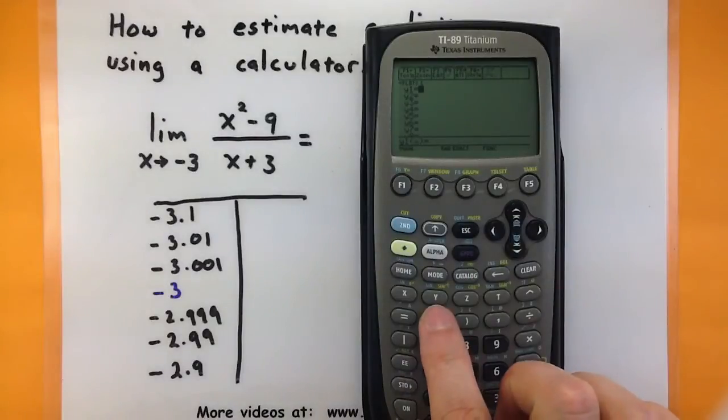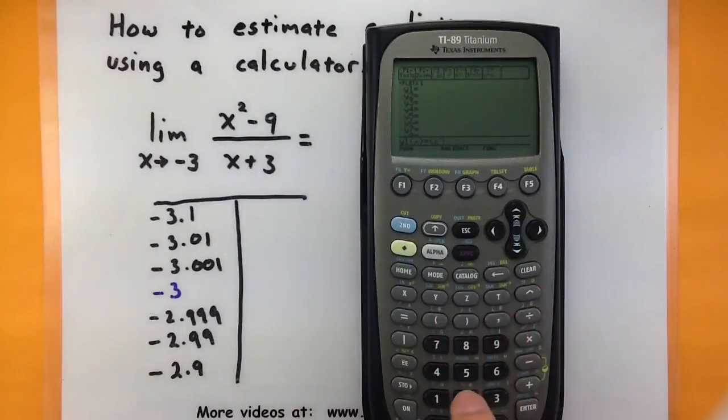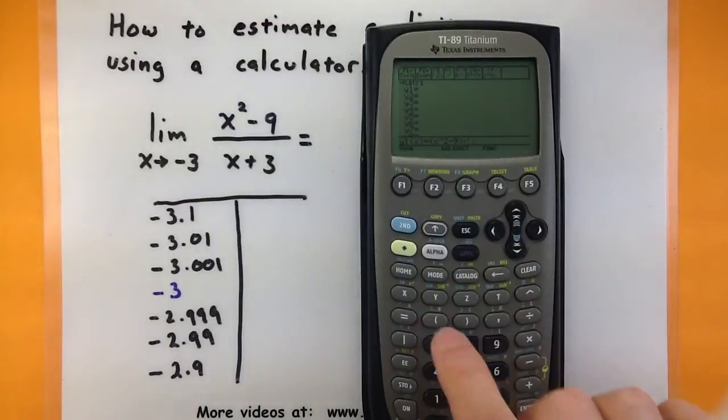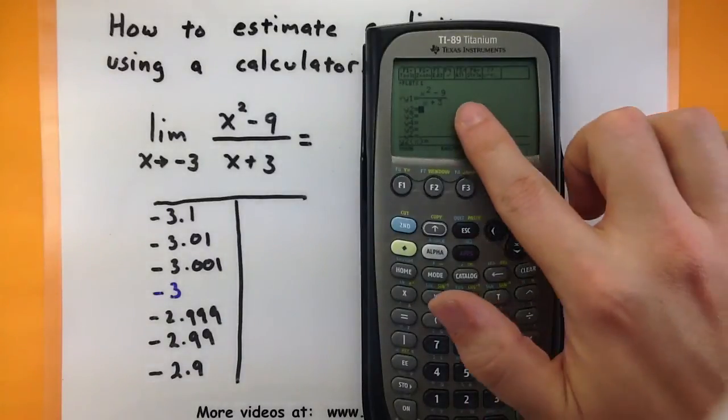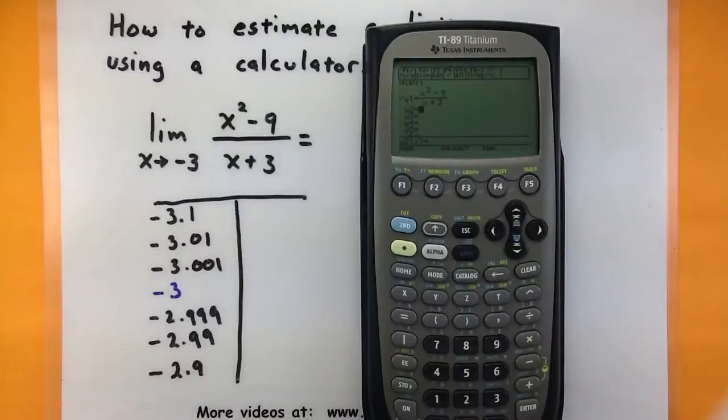And then I'll type in parentheses x squared minus 9, close parentheses, all divided by parentheses x plus 3, close parentheses, enter. And I can see it displays the x squared minus 9, all divided by x plus 3.